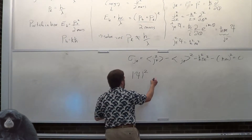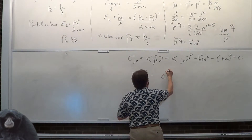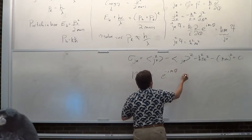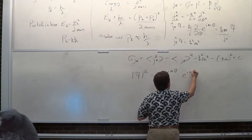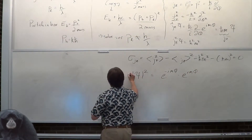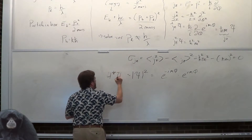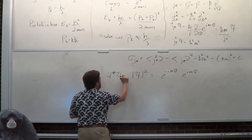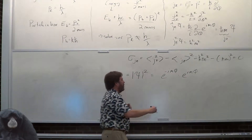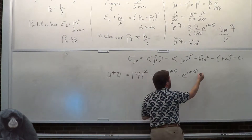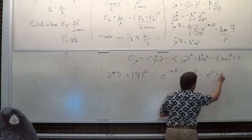So we have an angle — that's what we have to work with. I've got e to the minus iMφ times e to the iMφ, because the absolute value is the complex conjugate times the function itself. And what is this? It's 1 — e to the 0, which is 1.